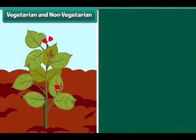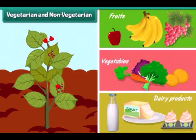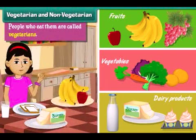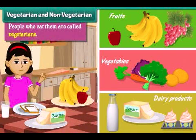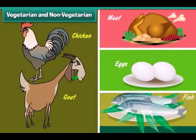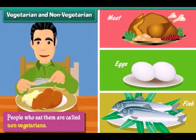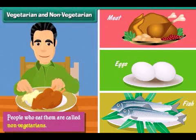Plant products like fruits, vegetables and dairy products are vegetarian food. People who eat them are called vegetarians. Animal products like meat, eggs and fish are non-vegetarian food. People who eat them are called non-vegetarians.